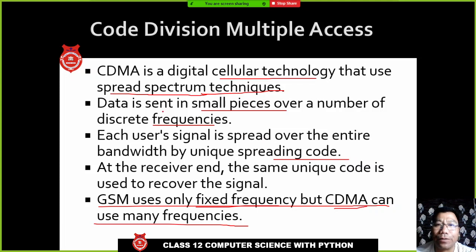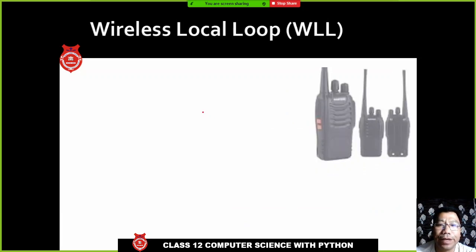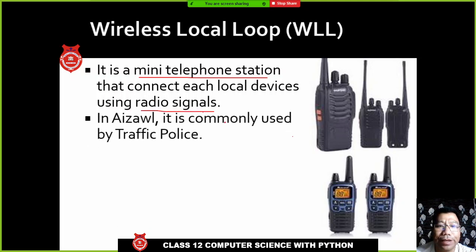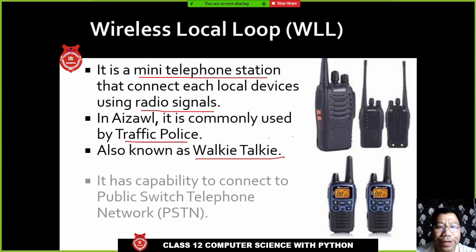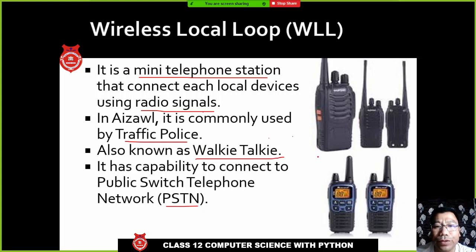WLL stands for Wireless Local Loop. It is a mini telephone system where local devices are connected using radio signals. WLL is commonly used by traffic police — you may have seen them — and it is also known as walkie-talkie. It has the capability to connect to the PSTN, which stands for Public Switched Telephone Network. A common PSTN in India is BSNL telephone exchange.